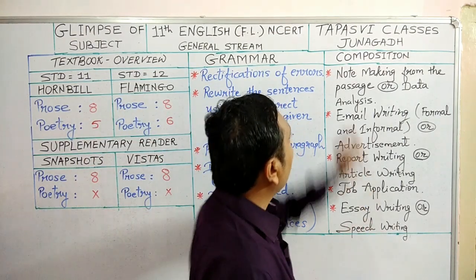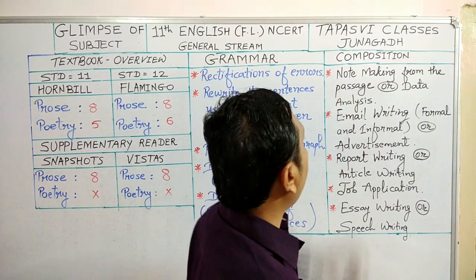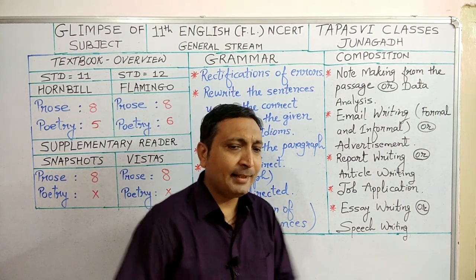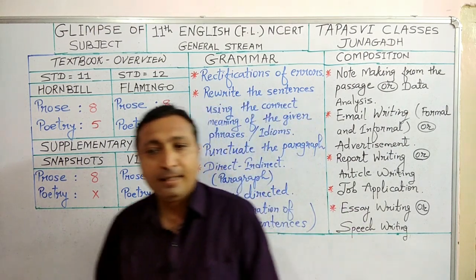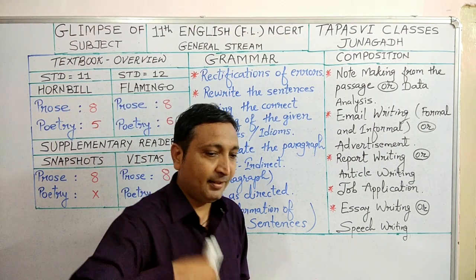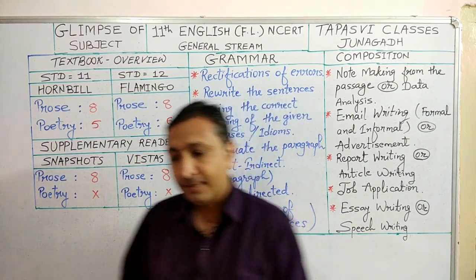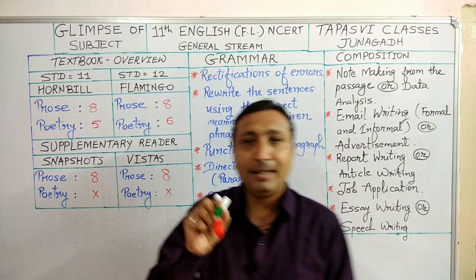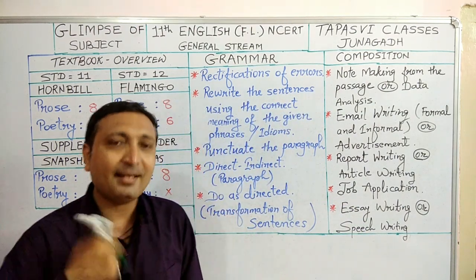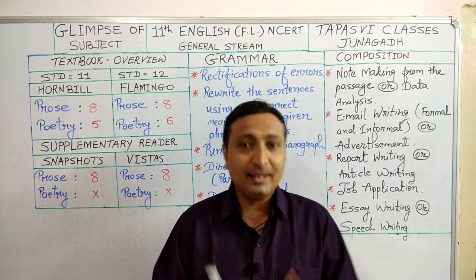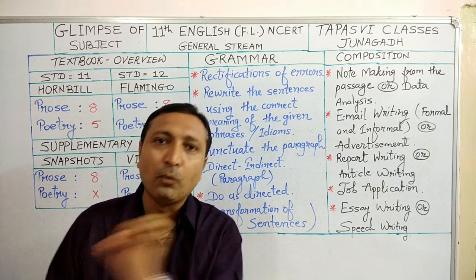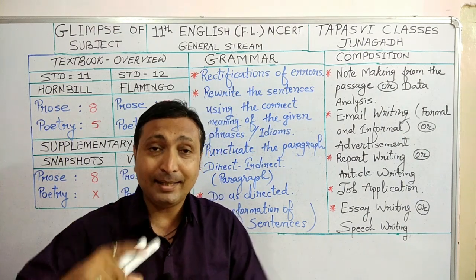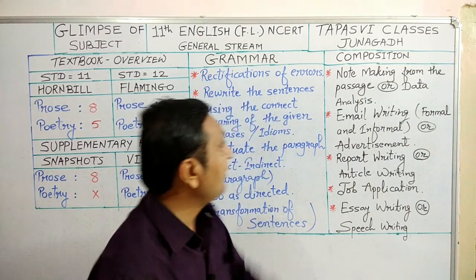Now let's move on to the composition part. The first thing in the composition part is note making from the passage. Let me explain what note making is. For example, if you are a journalist attending the press conference of Amit Shah, you can't write word to word. What you need to do is point out the important topics, important points, important notes that Amit Shah is speaking. So this is called note making — you note down the important things spoken by the speaker.